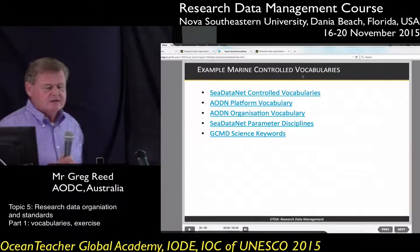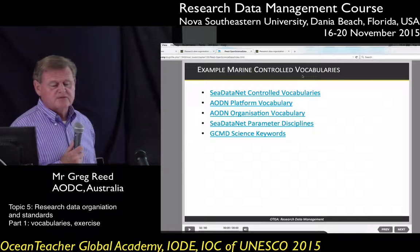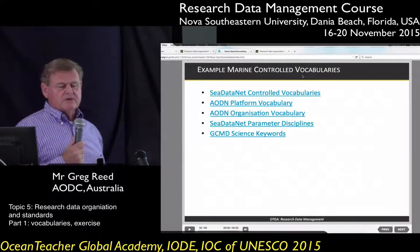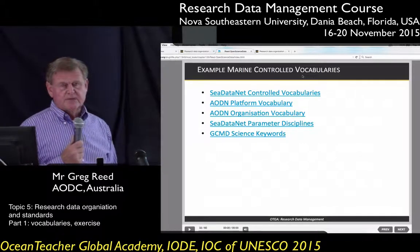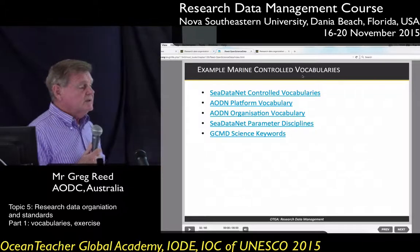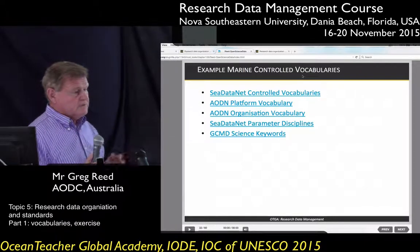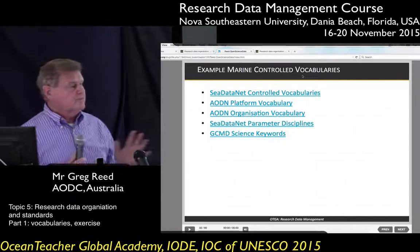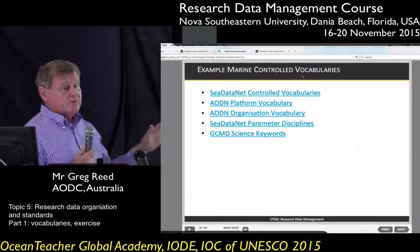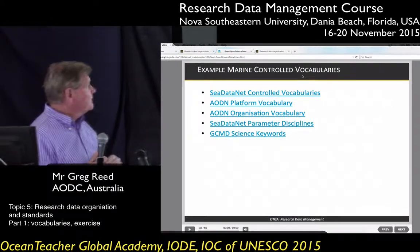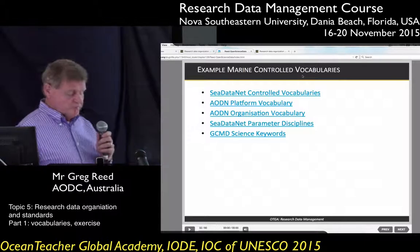Some examples of controlled vocabulary services: the CDataNet controlled vocabularies, and in Australia the Australian Ocean Data Network has vocabularies including a platform vocabulary and an organisation vocabulary. Note that an organisation vocabulary may be specific to a country — the AODN organisation vocabulary only has organisations within Australia, so it may not be useful for others. The CDataNet parameter disciplines, however, can be used by anyone as they cover common disciplines and parameters. There's also the GCMD, the Global Change Master Directory, which has a list of science keywords that are widely used.